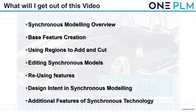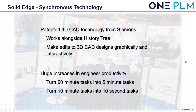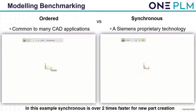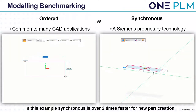So what is synchronous technology? It's a patented 3D CAD technology from Siemens that works alongside the history tree. We can make edits to the 3D CAD designs graphically and interactively by controlling dimensions. From this we can see huge increases in engineer productivity — we can turn 60-minute tasks into a five-minute task and 10-minute tasks into 10-second tasks. Let's have a look at a little bit of modeling benchmarking. On the left you can see we've got ordered, which is common to many CAD applications.